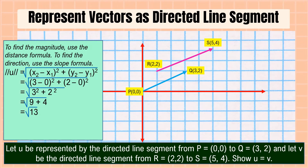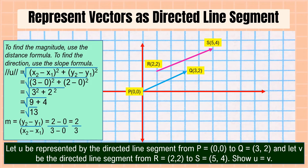Next, we're going to find the direction of directed line segment u by using the slope formula: (y₂ − y₁) divided by (x₂ − x₁). The slope is equal to 2/3.